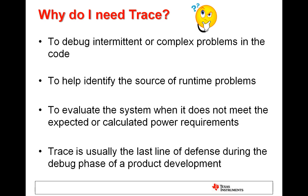There are multiple scenarios where trace can help to debug problems in the system. For example, the ability of core trace to see the entire past execution history allows finding places where the code behaves erratically or took an unexpected branch. Also, if the system is running slow or is returning incorrect or corrupt data, it is possible to use a combination of core and system trace to track down what may be happening. In certain devices, it is also possible to evaluate if the cores are actually powered down and not hung waiting for interrupts or other events. Irrespective of the scenario, trace is typically used as the last line of defense during the debug process.